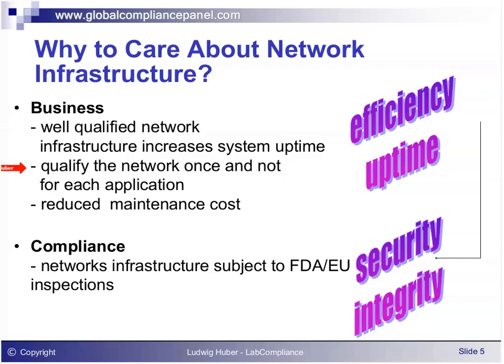The applications should all be validated. However, if you qualify the network — for example, a network device, a data center, and so on — all components shared by multiple applications are only qualified once, such as a router. Examples include network components, servers, switches, and so on. This definitively reduces the overall validation cost and increases overall efficiency.